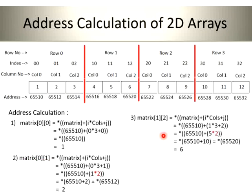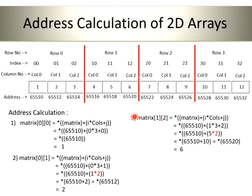For matrix[1][2]: row = 1, column = 2. Formula: base address + (1 × 3 + 2) × 2 = (3 + 2) × 2 = 5 × 2 = 10. Address = 65510 + 10 = 65520. The value at 65520 is 6, so matrix[1][2] = 6. For matrix[3][1]: i = 3, j = 1, columns = 3. So (3 × 3 + 1) × 2 = (9 + 1) × 2 = 10 × 2 = 20. Address = 65510 + 20 = 65530. The value at 65530 is 11, so matrix[3][1] = 11.